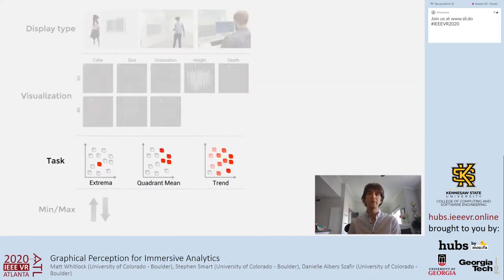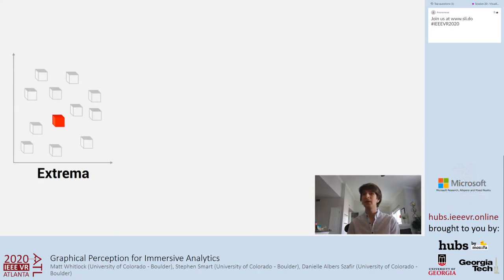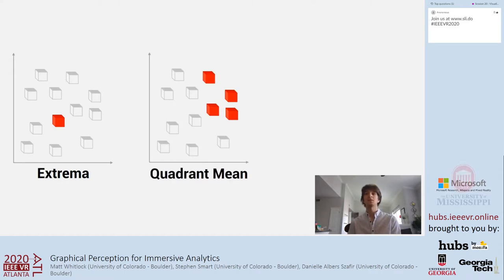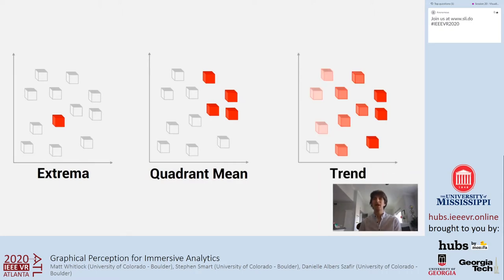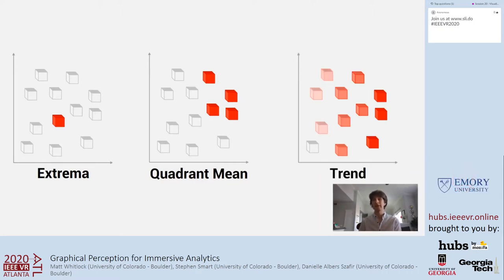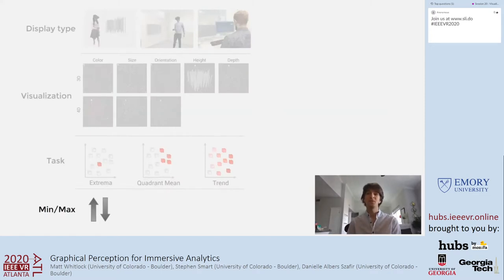Participants engaged with three different tasks. In an extrema task, participants look for the highest or lowest individual data point. Quadrant means tasks ask participants to identify the largest or smallest average area in a visualization, and trend tasks ask participants to identify the overall trend in the data. For symmetry, half of the tasks ask for the highest value, highest area, or increasing trend, while half ask for the lowest value, area, or decreasing trend.